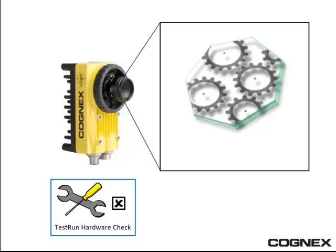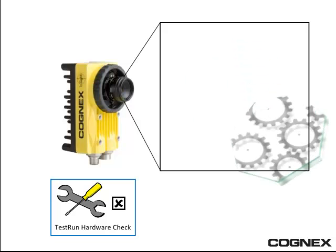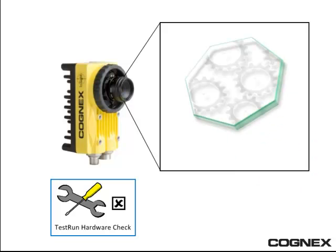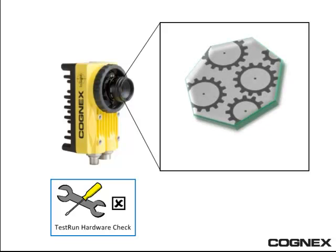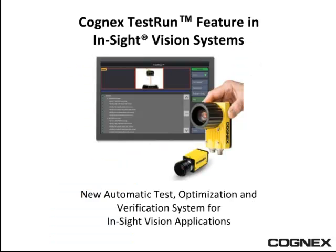It checks factors such as the focus or the position of the camera or target and the illumination of the current system, further eliminating errors by checking the system before it checks the parts. With Cognex Test Run, maximize your confidence, maximize your performance — available only on In-Sight vision systems.